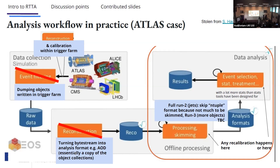The reconstruction is essentially a copy unpacked in a different way — this is your reprocessed AOD. Then there's processing and skimming. In full run two, for jets in Atlas, we actually skipped the ntuple format because we had too much data and it wasn't convenient to copy information a third time — there wasn't much to skim. In run three we're going to have more objects, not just jets, so we need to decide whether to divide different object streams into smaller formats — this is to be confirmed.